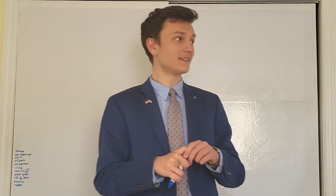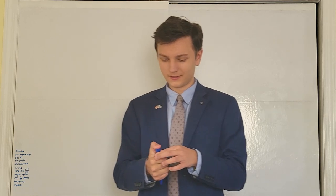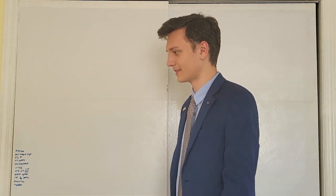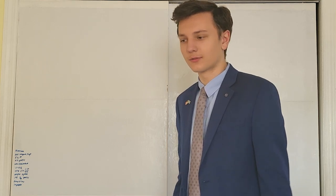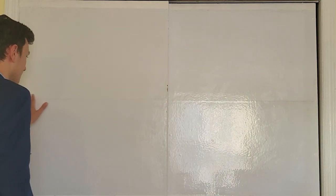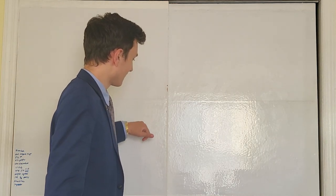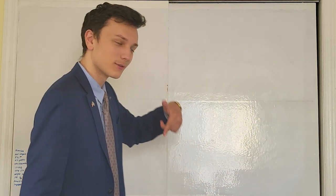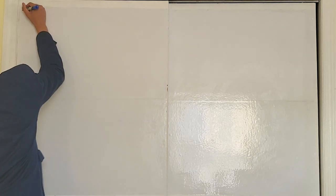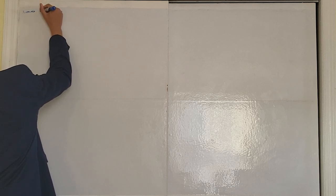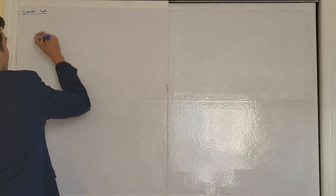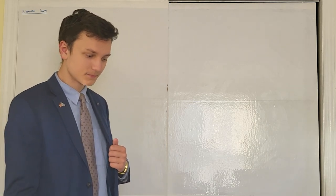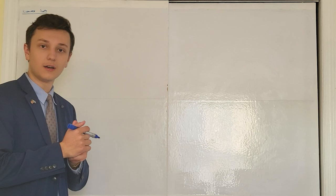Welcome everyone to the end of the derivative and the beginning of the integral. We're going to come back to unite these two units later, but for right now we're starting a completely different section of calculus: the integral. To understand the integral the same way we understood the derivative, we have a limit definition to look at first. For the derivative we have the difference quotient; for the integral we're going to have the Riemann sum. For the derivative we used a limit definition to get closer and closer to an instantaneous rate of change. For the integral, we're getting closer and closer to the area under a curve.